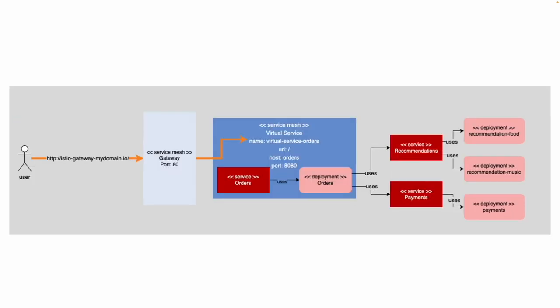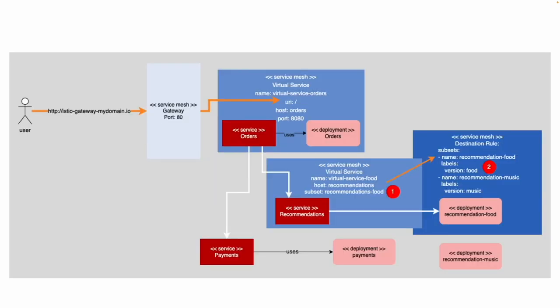When the service mesh is first applied, the orders service will get recommendations from both the food and the music deployments in a round robin fashion. However, after the service mesh is running, we're going to apply a destination rule. The destination rule will tell the recommendations service to use only a specific deployment — first recommendations food, then we'll alter it to show recommendations music data.